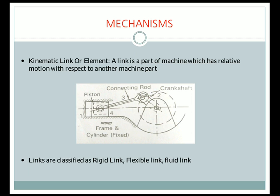Links are classified as rigid link, flexible link, and fluid link. In the case of a rigid link, the links will not deform while transmitting motion — they remain in their own shape. An example is the connecting rod; in the above sketch, all the links are rigid links.